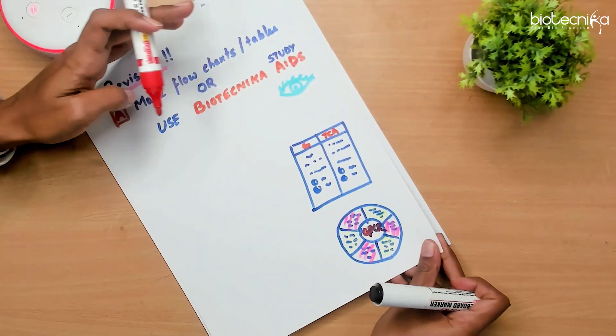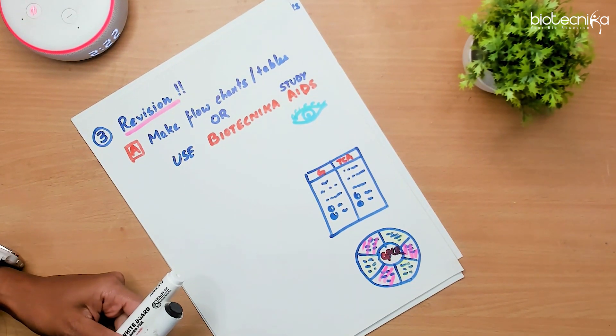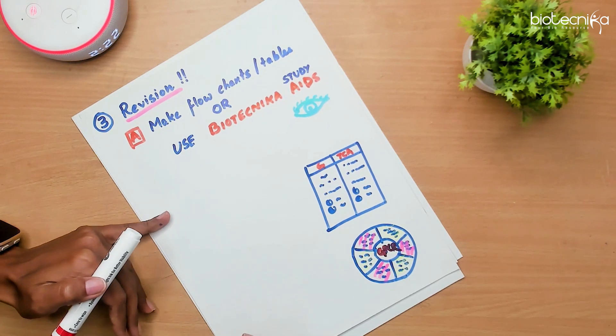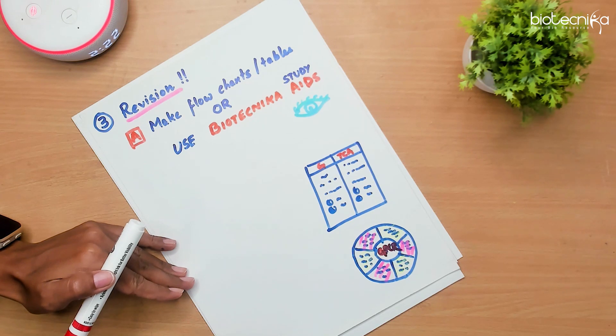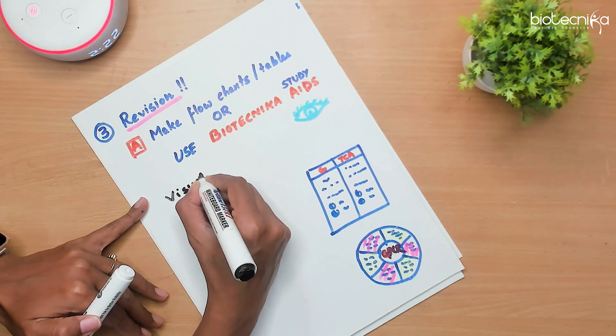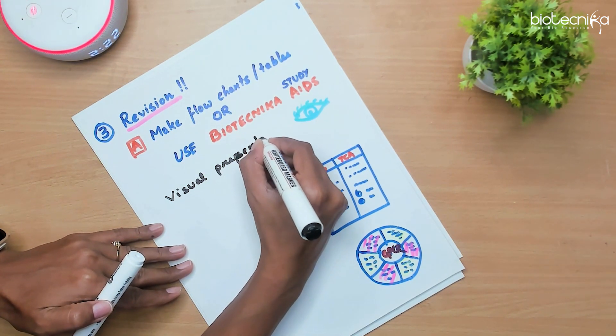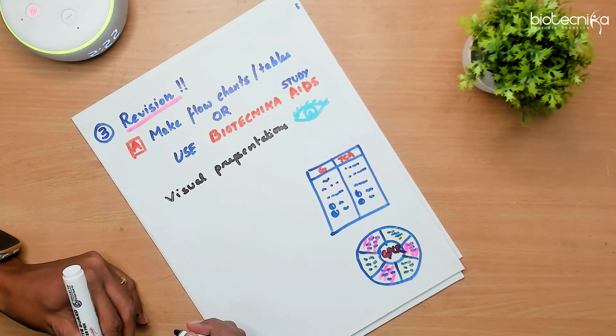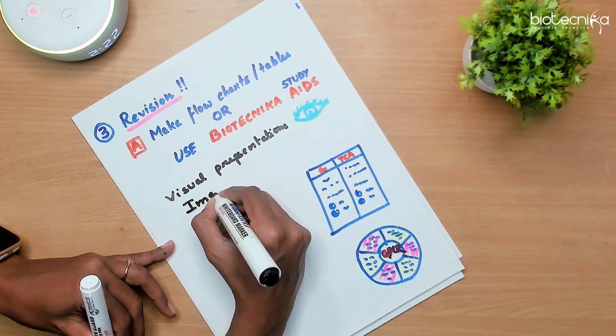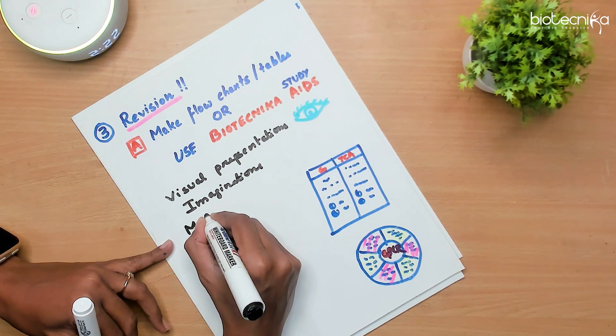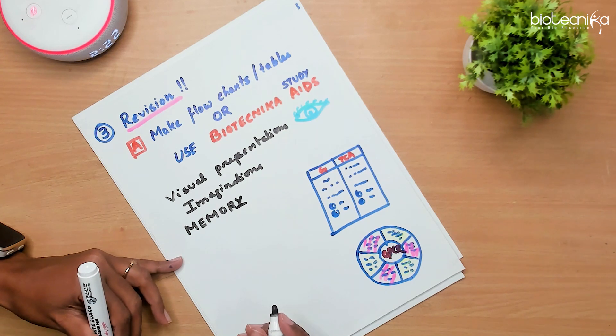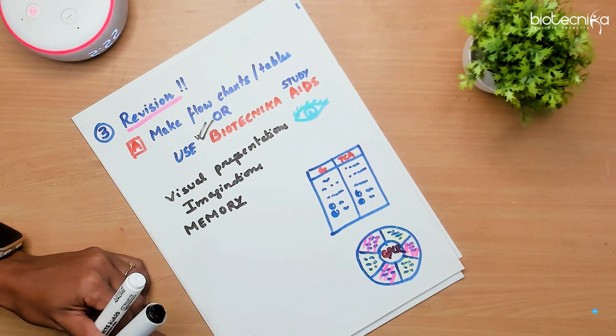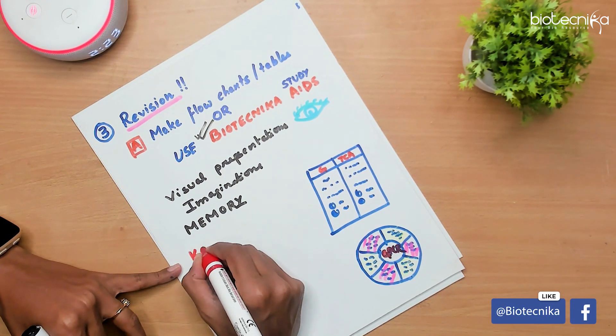Third strategy for getting 100% marks. Yes, revision. Extremely important. So either you can make flowcharts like how I have been teaching you by flowcharts, or you can make some short notes. So basically you want to use some visual presentation. What your mind perceives is very important for preparing for a particular competitive exam. So go for imagination, go for visual representations and that is going to increase your memory power. Alternatively, if you do not have time to make your own flowcharts or tables, you can go for Biotechnica study aids or Biotechnica visual aids. So we already have something which is in the flowchart form.